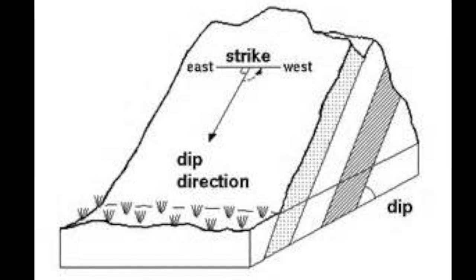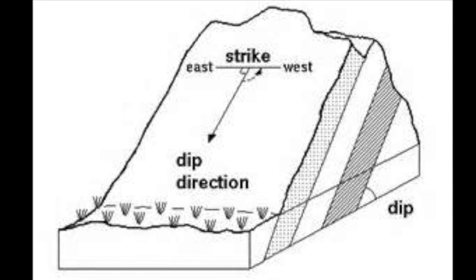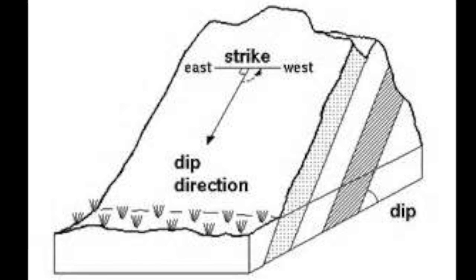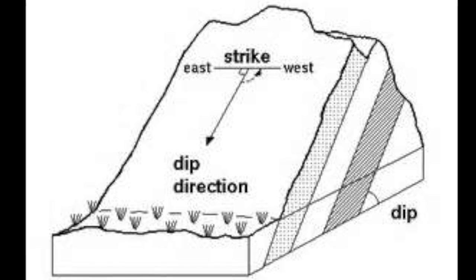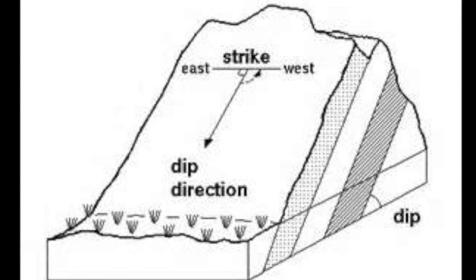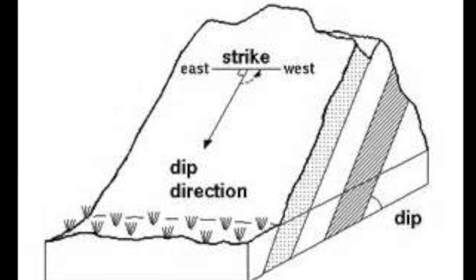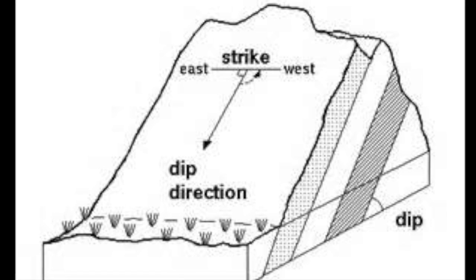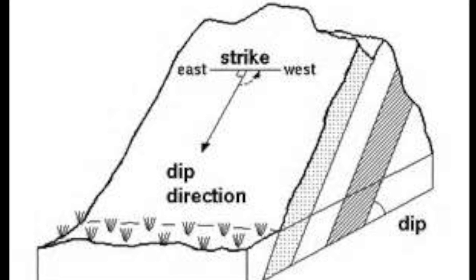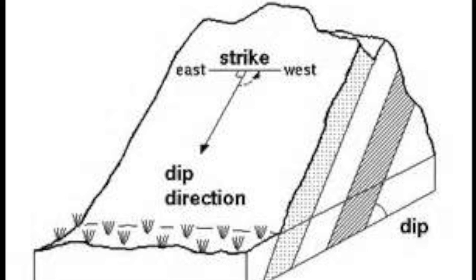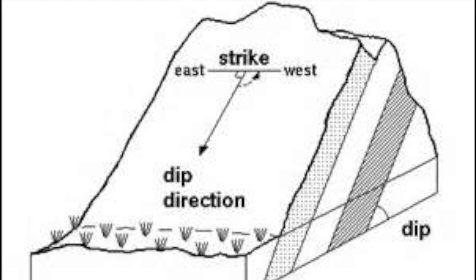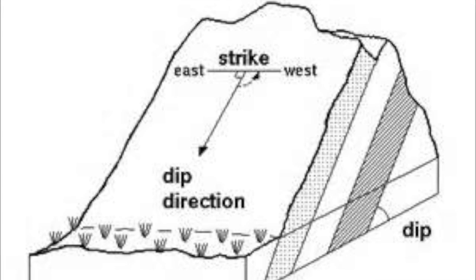Dip refers to the angle at which the bed of rock is laying with respect to the horizontal. A zero-degree dip means that the bed is flat, and a 90-degree dip means the bed is vertical. Dip direction refers to the compass direction from zero to 360 degrees that the beds are dipping towards. In this image, the dip direction is north. Strike is a two-way compass direction showing the orientation of the bed along the surface. In the image shown, the bed is striking in an east-west direction.